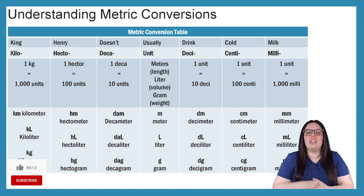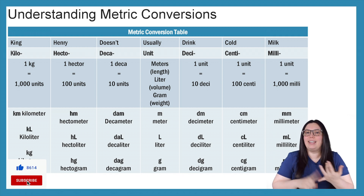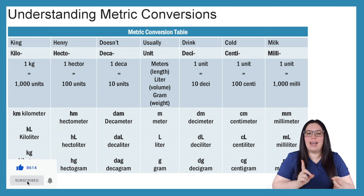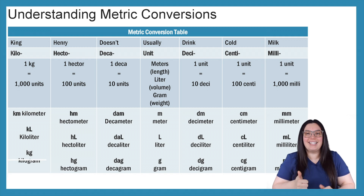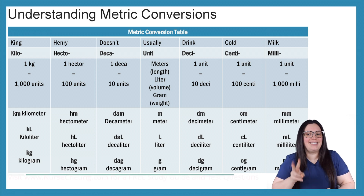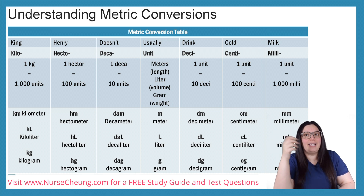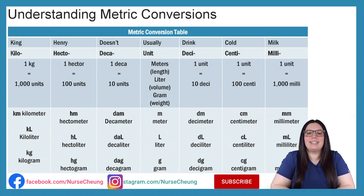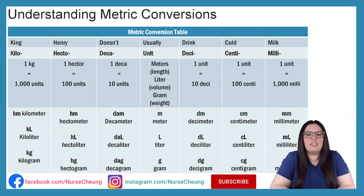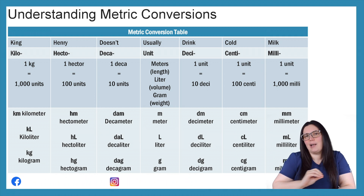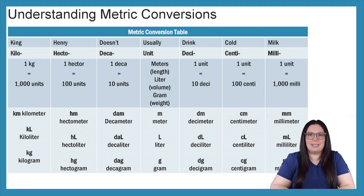So to begin, let's take a look at our metric conversion table. We have Kilo, Hecto, Deca, Unit, Deci, Centi, and Milli. Now this is a lot and the easiest way that I remember it is 'King Henry doesn't usually drink cold milk' and that kind of helps me set up my table whenever I'm doing metric conversion equations.